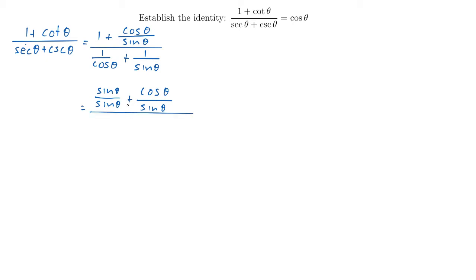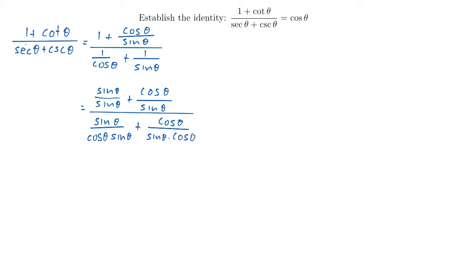And in the denominator, we have 1 over cosine theta and 1 over sine theta. The best way to find a common denominator here is to just multiply the two denominators, so the common denominator should be cosine theta times sine theta. For the first fraction, we already have a cosine theta, so we're missing a sine theta, so we multiply top and bottom of that fraction by sine theta. We get sine theta divided by cosine theta times sine theta.